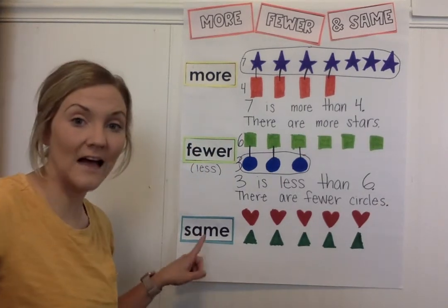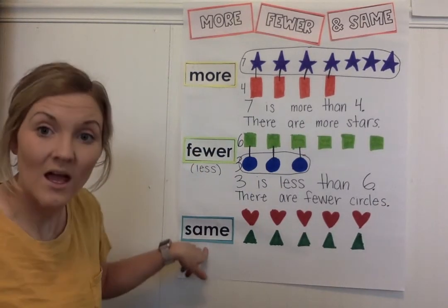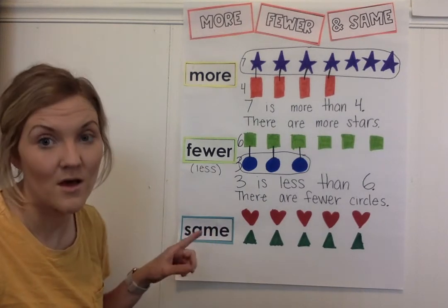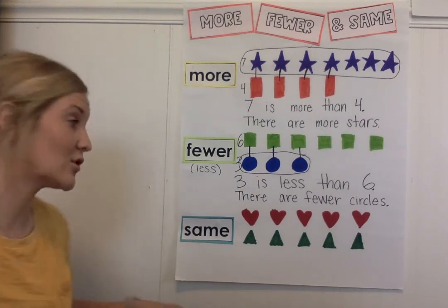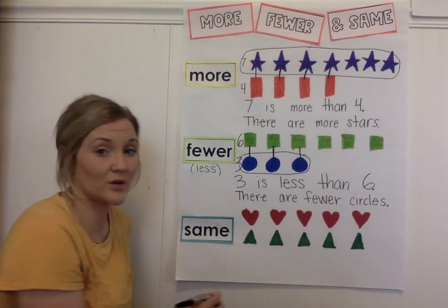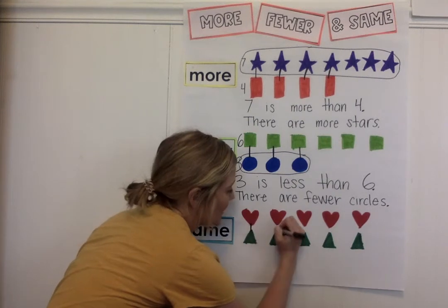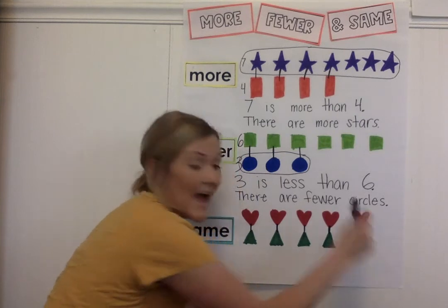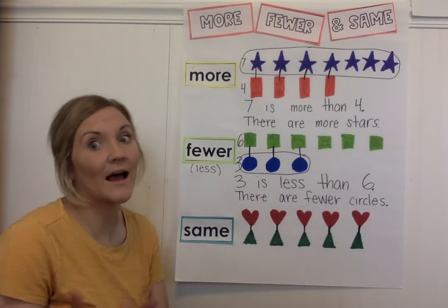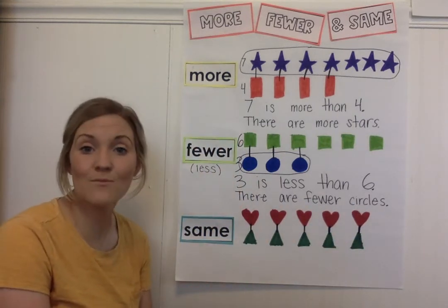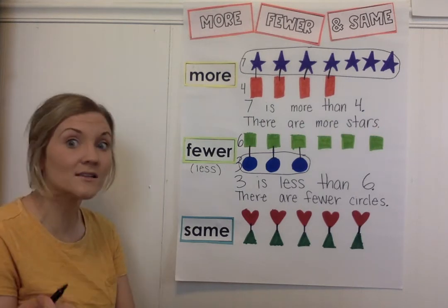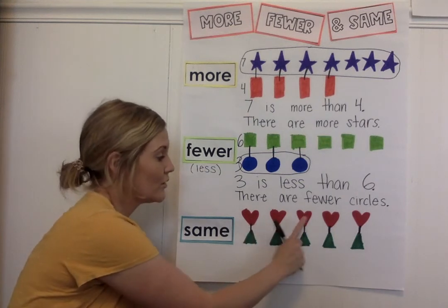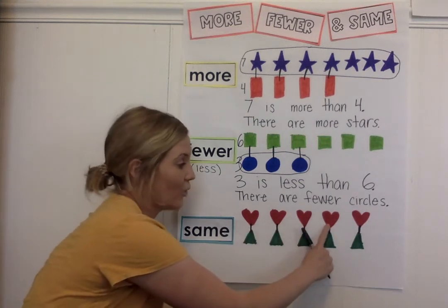Now we're going to talk about the last word: same. Remember, we've also used the word equal to describe same — it means they are the exact same. So if we buddy up these red hearts with these green triangles: buddy, buddy, buddy, buddy, buddy — everybody gets a buddy! Everybody's happy, so that means there are the same number. Let's count the red hearts to confirm: one, two, three, four, five.